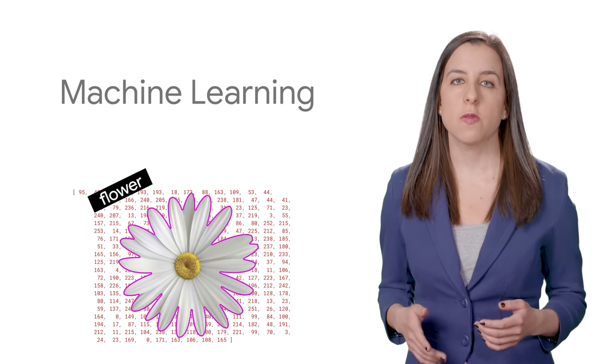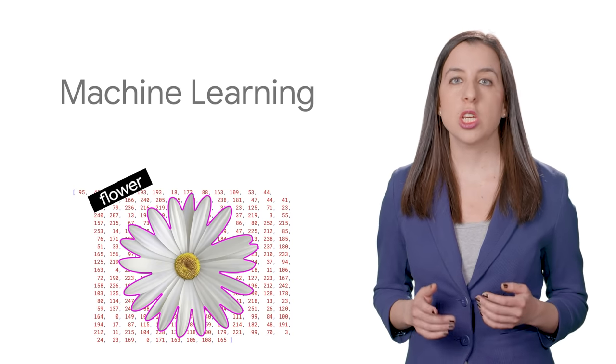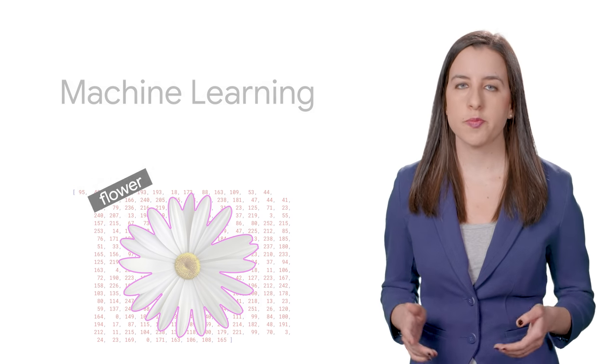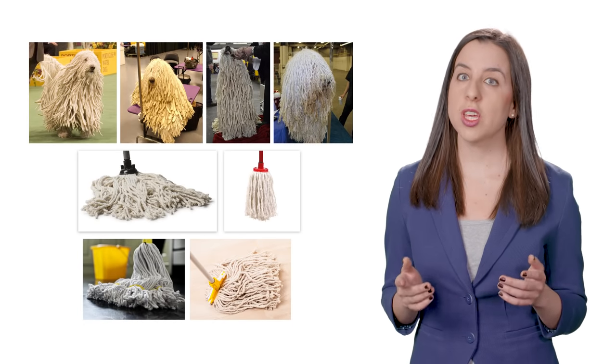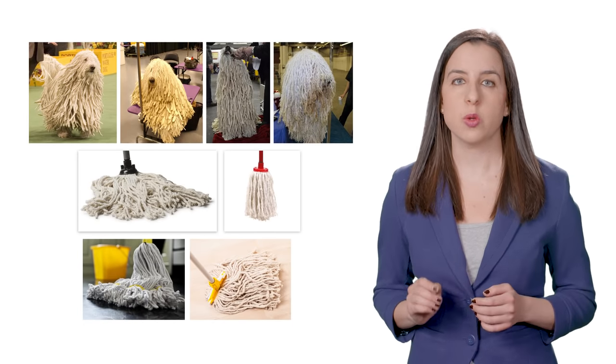And what if we have images that are difficult for a human to classify? Can machine learning achieve better accuracy? For example, let's take a look at these images of sheepdogs and mops, where it's pretty hard even for us to differentiate between the two.